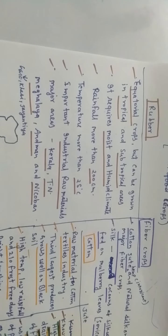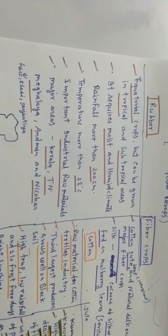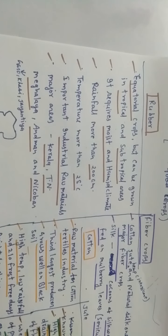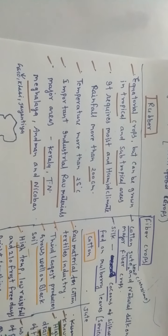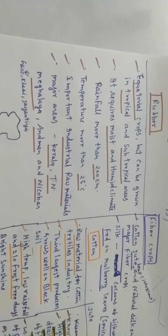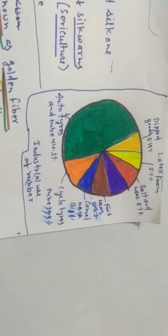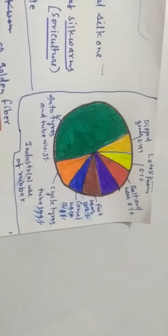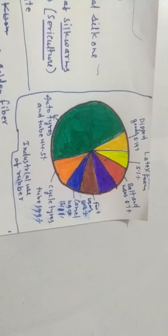It requires moist and humid climate, rainfall more than 200 cm. This is the only crop which requires the highest demand of rainfall. It requires a temperature more than 25 degrees centigrade. It is an important industrial raw material. Auto tires and tubes are 44%. You can see all types of products which we get from the rubber industry with the percentage given there.